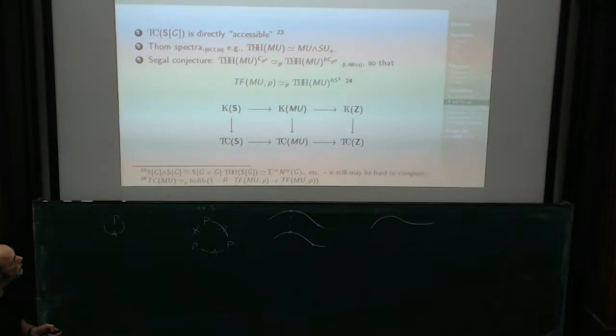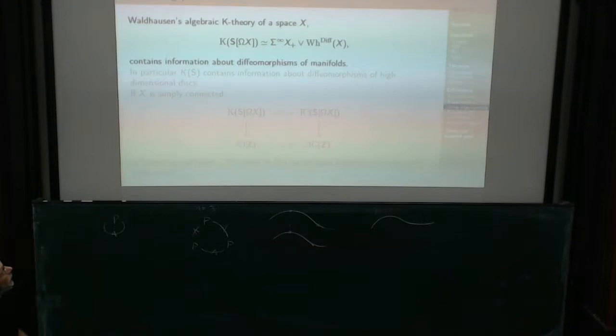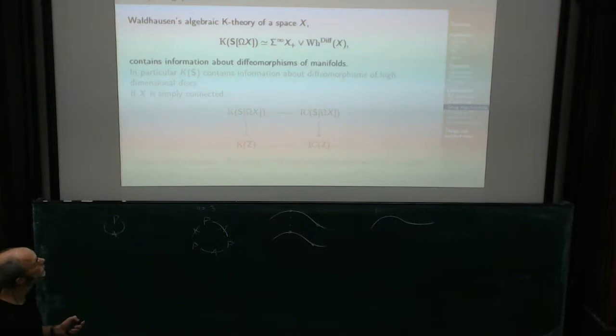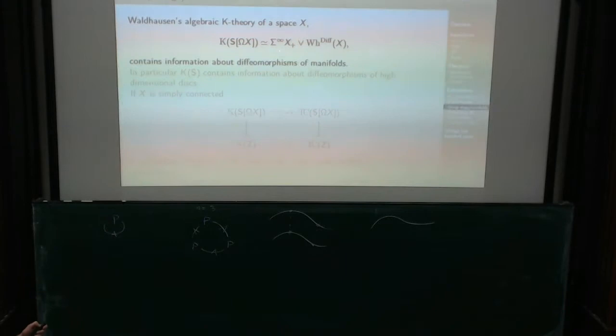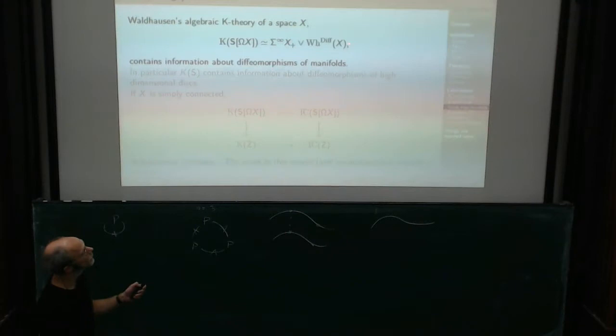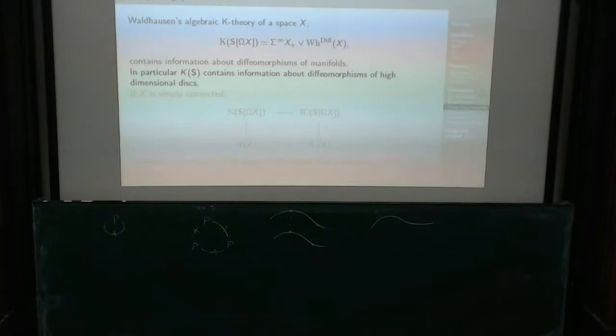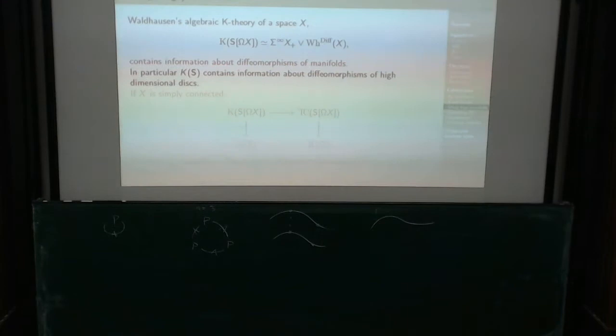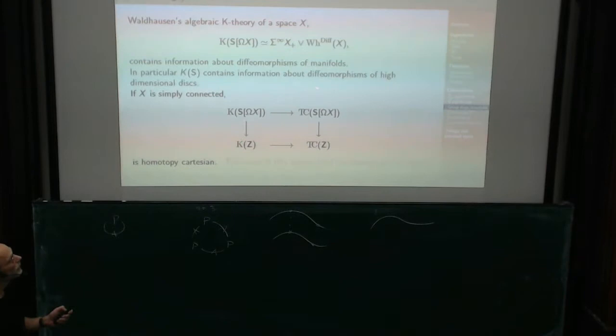MU is fascinating. The sphere spectrum and group rings are very interesting because the K-theory of spherical group rings — when you have the loop space of a certain space X — tells you a lot about concordances and diffeomorphisms of manifolds. It splits up into the stable homotopy of X and the so-called Wh-Diff spectrum. This is one of the main reasons some of us are interested in algebraic K-theory at all: we want to understand diffeomorphisms of manifolds.